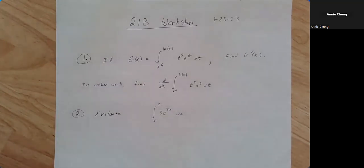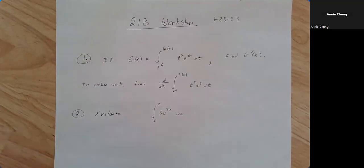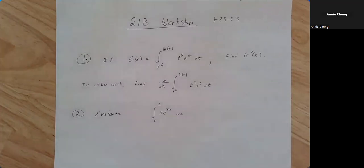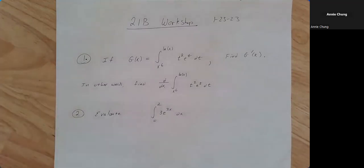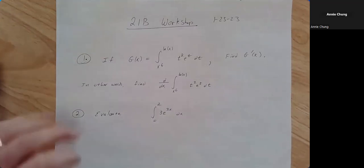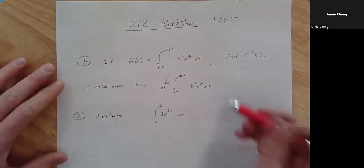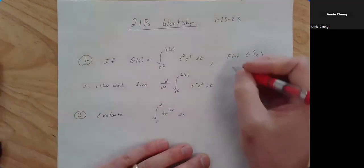The first problem: if capital G of x is equal to the integral from x to the sixth to the natural log of x of t squared e to the t dt, find the derivative. This is a straightforward application of the Fundamental Theorem of Calculus Part 1, which says if you take the derivative of the anti-derivative you get the function you started with.